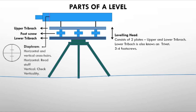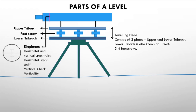The diaphragm is an important section inside the telescope. It has horizontal and vertical crosshairs. The horizontal crosshair is used for staff reading; the vertical crosshair is for alignment. The posterior part of the telescope is called the eyepiece, and the front optical part is called the object glass.